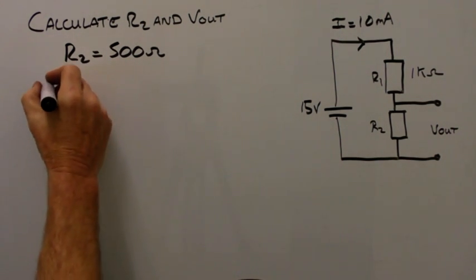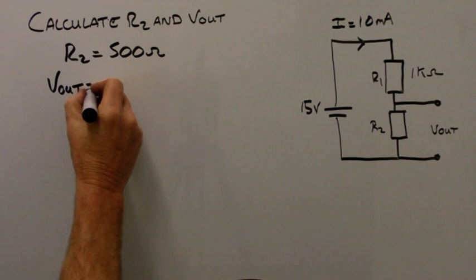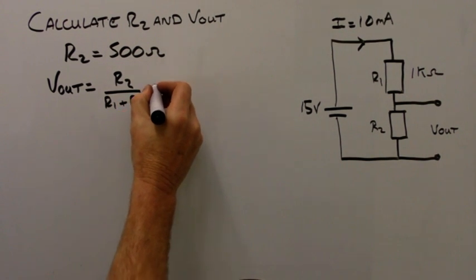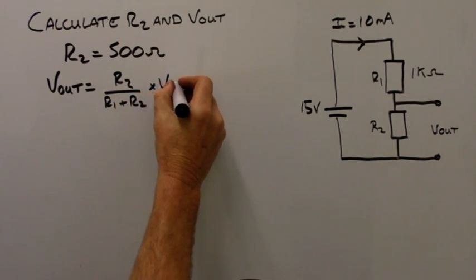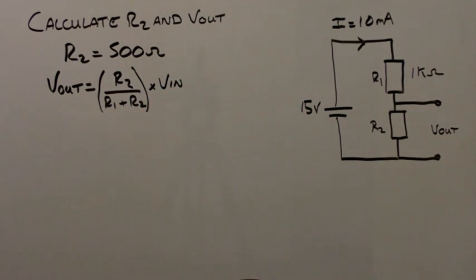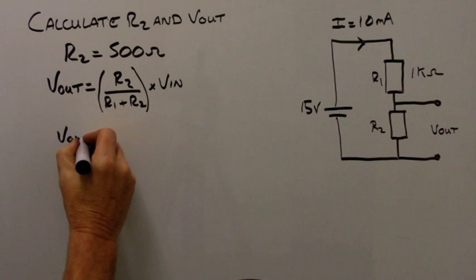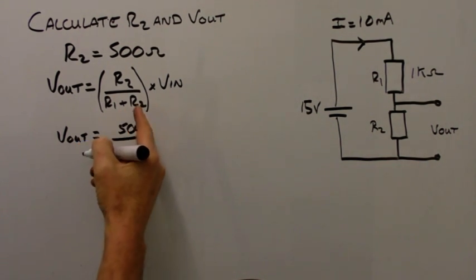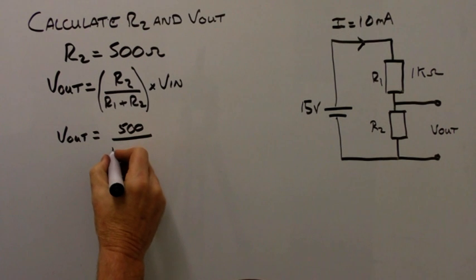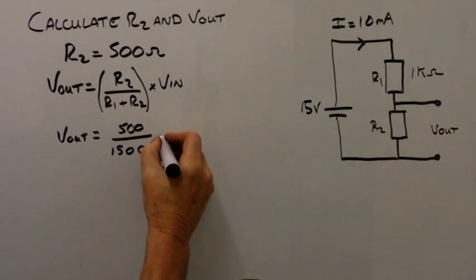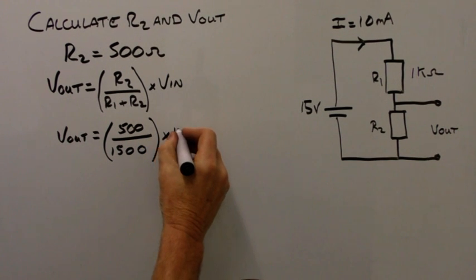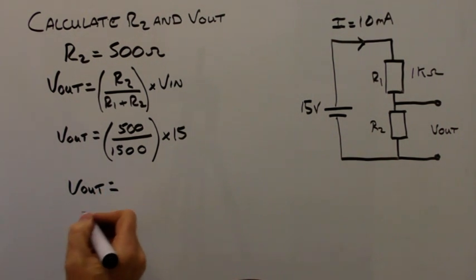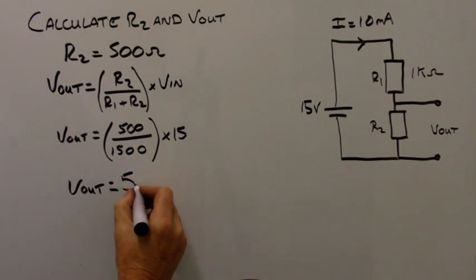The formula that we derived was Vout equals R2 over R1 plus R2, multiplied by the voltage in. So Vout equals R2, which is 500 ohms, divided by R1 plus R2, which was 1500 ohms, multiplied by the voltage in, multiplied by 15. So Vout equals 5 volts.